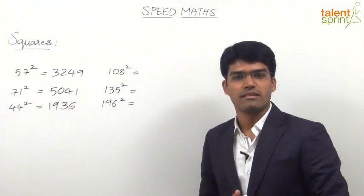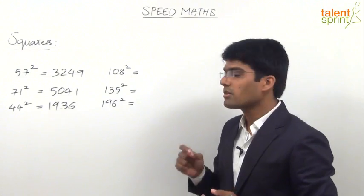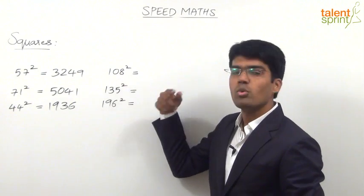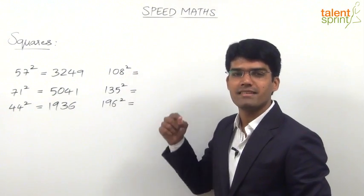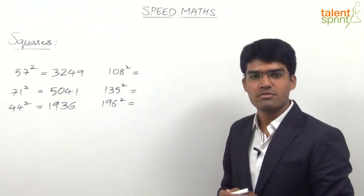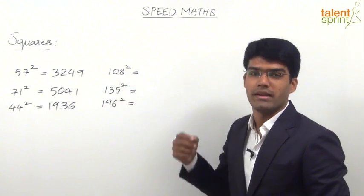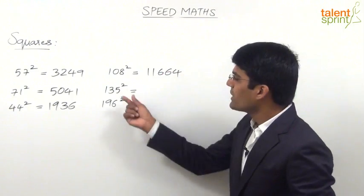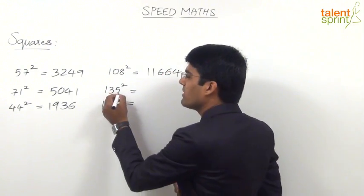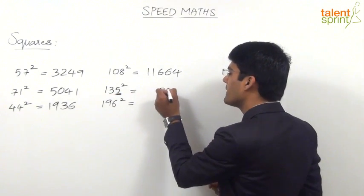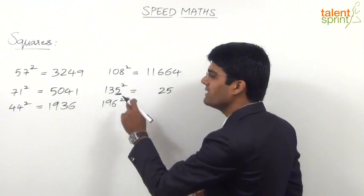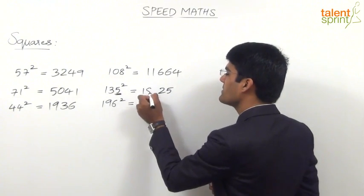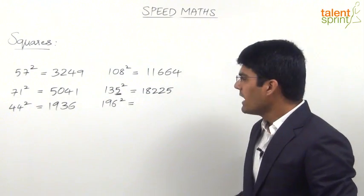108 squared should be taken as 100 plus 8, whole squared. The first term is 10,000. The second term is 2 times 8 into 100, that is 16 into 100 = 1,600. So 10,000 plus 1,600 is 11,600, plus 8 squared which is 64, giving 11,664. The next one is 135 squared. We know squares of numbers ending with 5 end in 25, and the remaining part is 13 into 14 = 182. So the answer is 18,225.